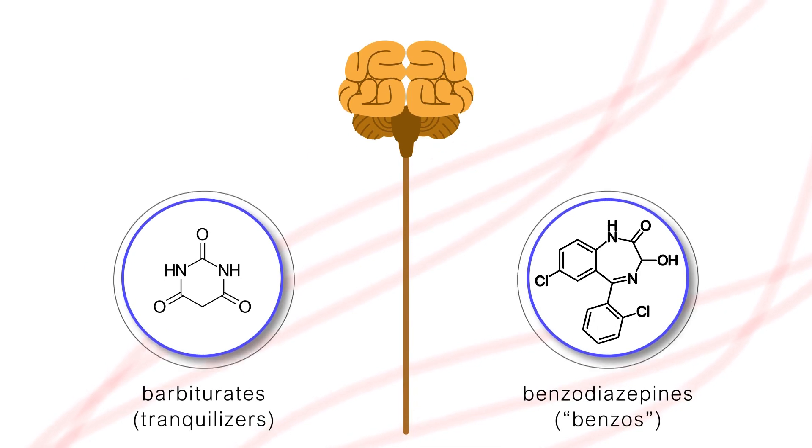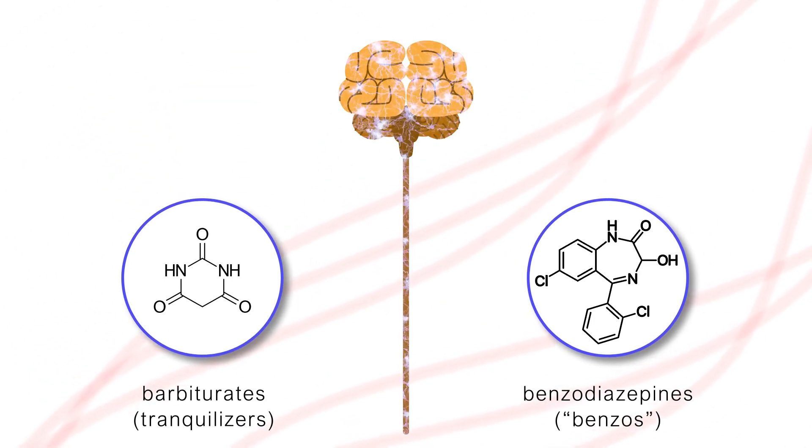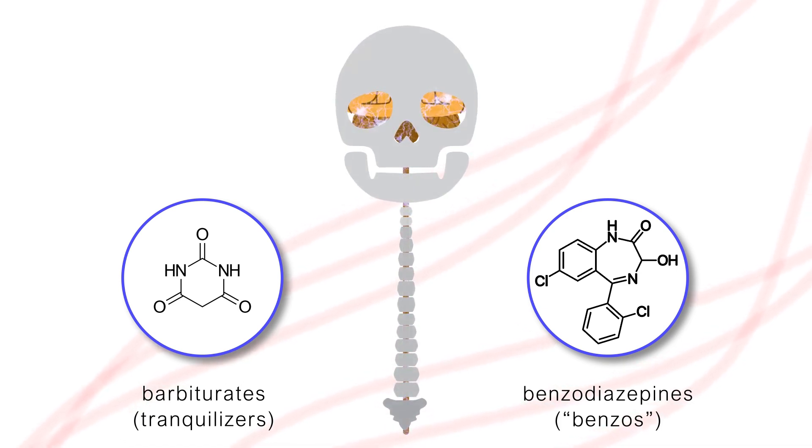These drugs work by depressing the central nervous system. The central nervous system is a network of more than 100 billion nerve cells that are enclosed by the skull and spinal cord vertebrae.